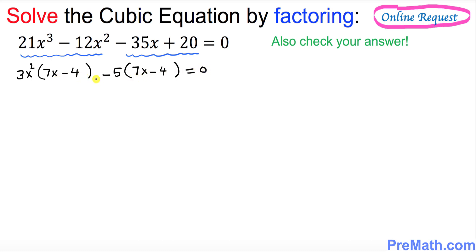Bring it outside and then inside parentheses gonna be 3x squared minus 5 equal to 0.